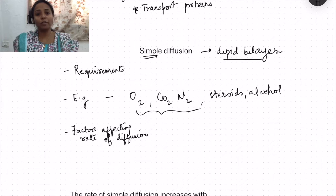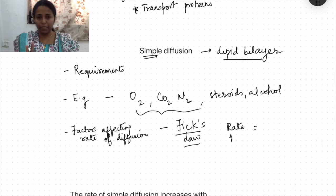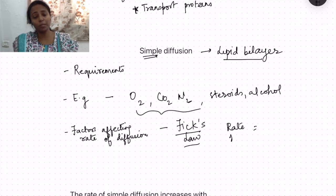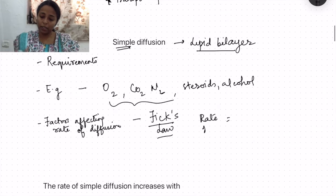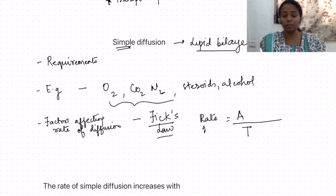The factors affecting the rate of simple diffusion are given by Fick's law. Fick's law states that the rate of diffusion depends on three main things: characteristics of the membrane, the pressure or concentration gradient, and characteristics of the substance being transported — including lipid solubility and molecular weight. Rate is directly proportional to membrane area and inversely proportional to membrane thickness.